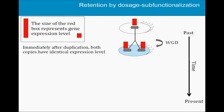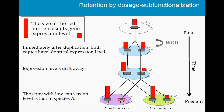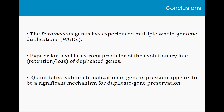To summarize the model: after duplication, the two copies are born with the same expression level and are retained for dosage constraints. But then progressively the expression level starts to diverge between the two copies, which leads to a strong imbalance, which then releases the selective pressure on the copy with the lowest expression level. If you wait long enough, the lowest-expressed copy will be lost in all species. The take-home messages: the paramecium genus has experienced multiple whole genome duplications. Expression level is a strong predictor of the evolutionary fate of a gene — whether it will be retained or lost after duplication. And what we call quantitative subfunctionalization of gene expression is probably a very significant mechanism for duplicate gene preservation.